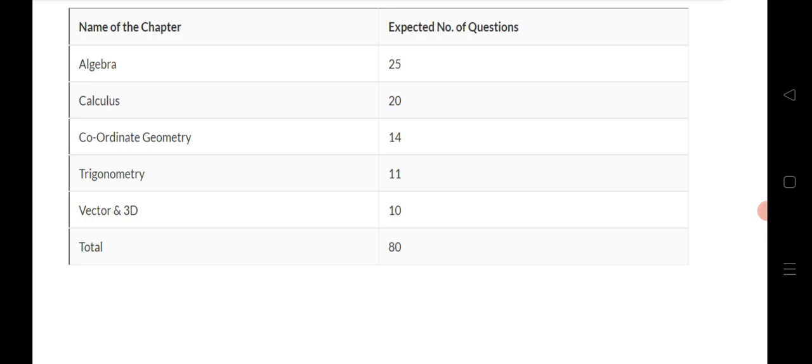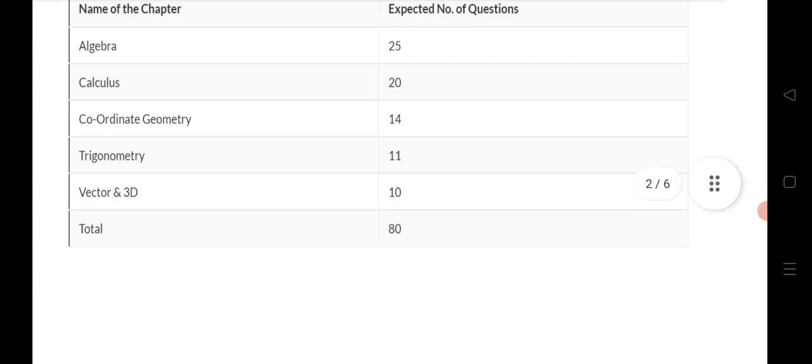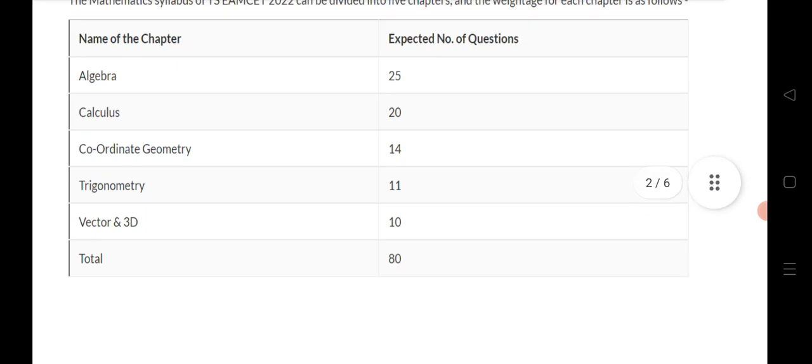From coordinate geometry - straight line, pair of straight lines, circle, ellipse, hyperbola - all these chapters, and trigonometry, all first year chapters, 11 questions we are expecting. Vector and 3D geometry, 10 questions we are expecting: addition of vectors, product of vectors, and three dimensions. If you practice that, definitely that will give you good marks.